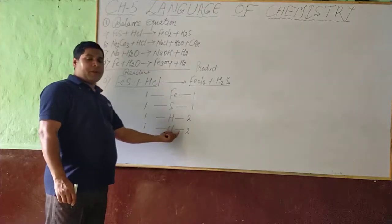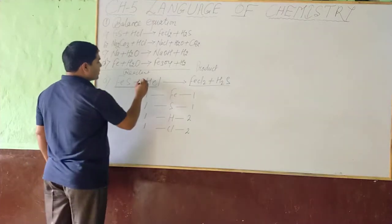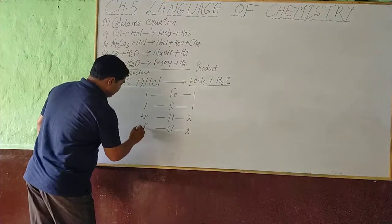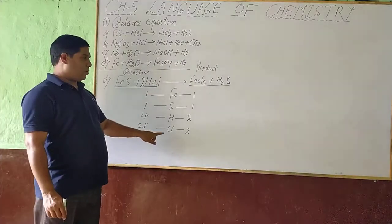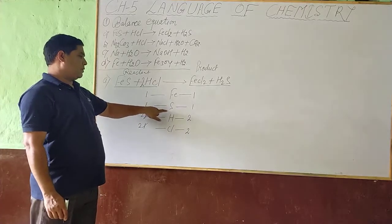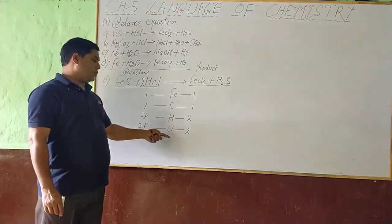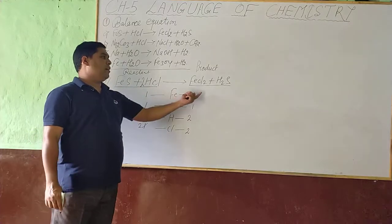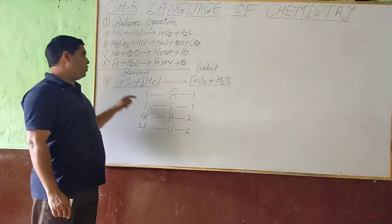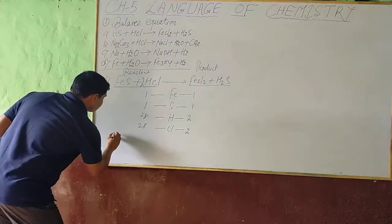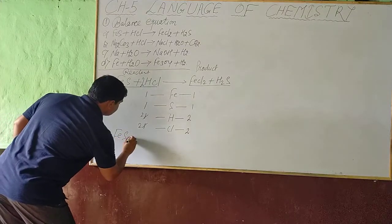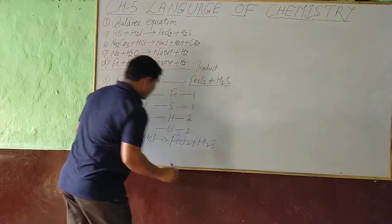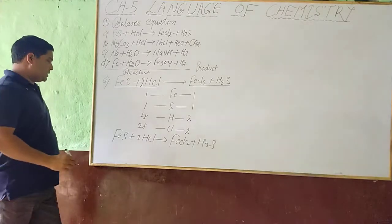We need to balance the number of atoms on both sides. So we place a coefficient of 2 in front of HCl. Now hydrogen becomes 2 on the reactant side and chlorine becomes 2. All atoms are now balanced: iron 1:1, sulfur 1:1, hydrogen 2:2, chlorine 2:2. The equation FeS + 2HCl → FeCl₂ + H₂S is now balanced.